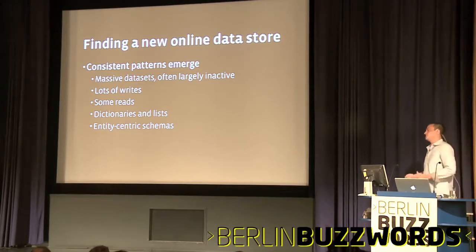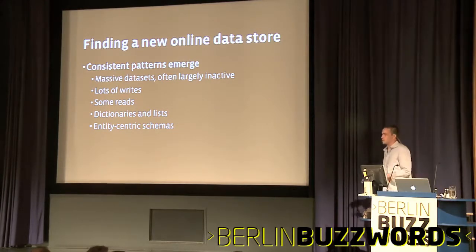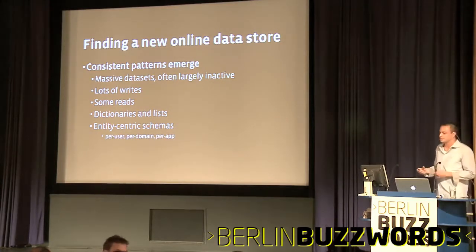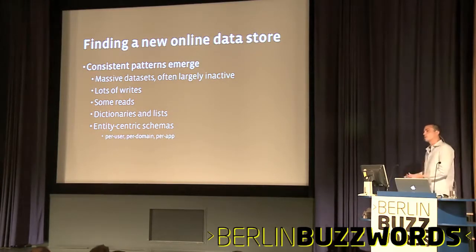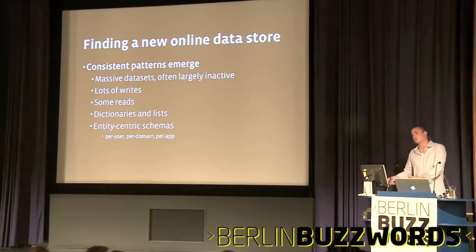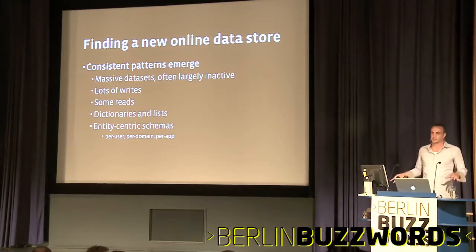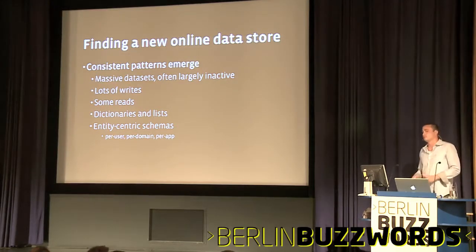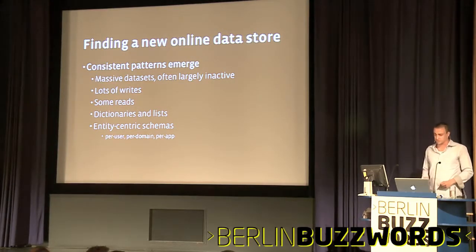And also, entity-centric schemas — this is kind of why Cassandra was built in the first place. You want to do a lot of things at the per-user or per-domain or per-application level. So for inbox search, for example, I only need a search index of my inbox — I don't need a global index across all users. And it's difficult to do that kind of thing with most search systems.